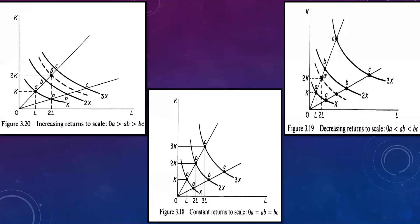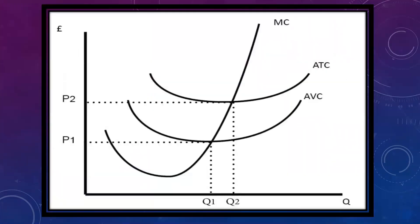Then, increasing returns to scale and decreasing returns to scale — when it is called increasing returns to scale depending upon the distance between isoquants. Just revise that once. Next is the relationship between marginal cost, average variable cost, and average total cost — all these things are covered in the previous videos.